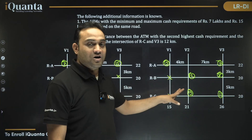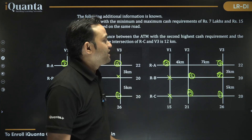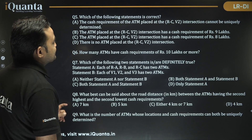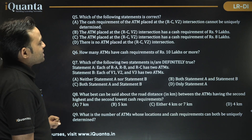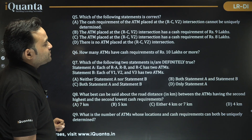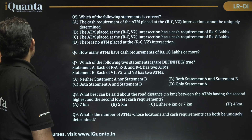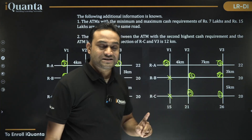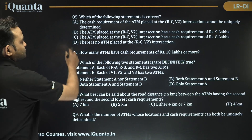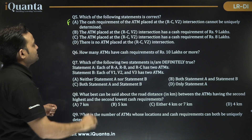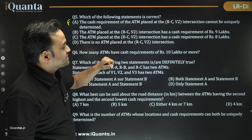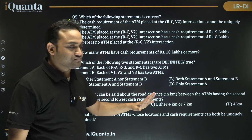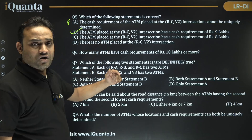Question 5: Which statement is correct? Option A says the cash requirement at RC∩V2 cannot be uniquely determined. In both cases the requirement there is 9 lakhs, so that is false. Option B states the ATM at RC∩V2 has a cash requirement of 9 lakhs — this is correct. We don't need to check the remaining options.